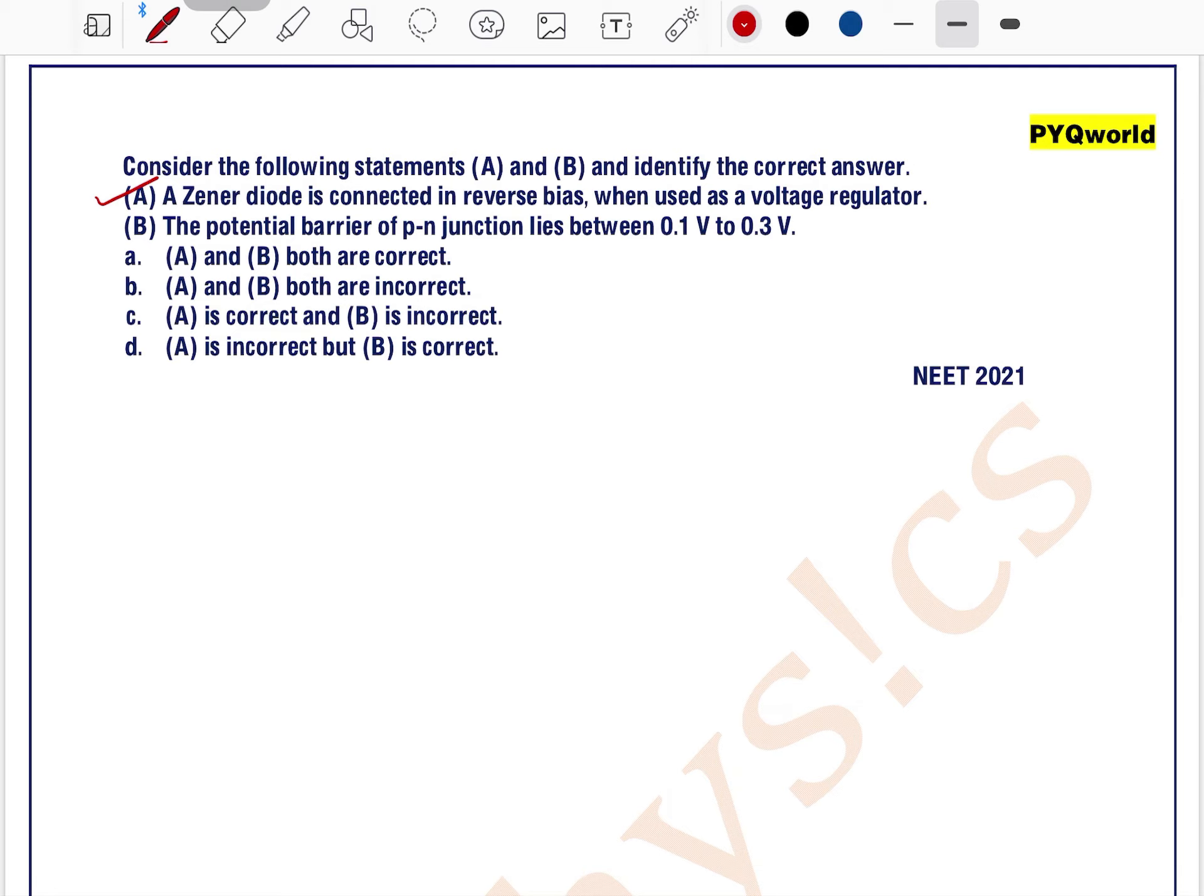Second, statement B: The potential barrier of a PN junction lies between 0.1V to 0.3V. Now this point B is a little bit contradictory. Why?